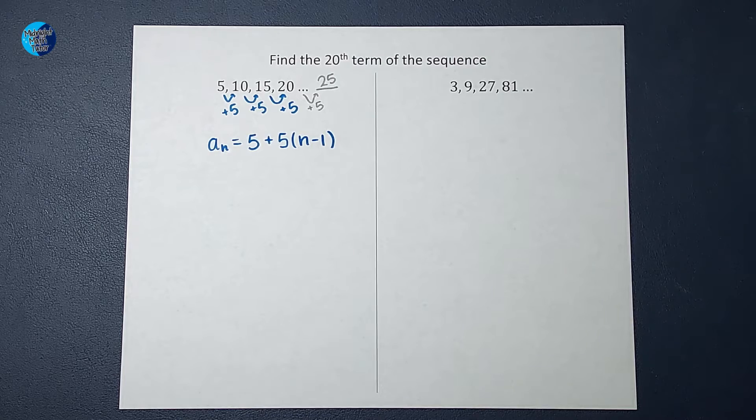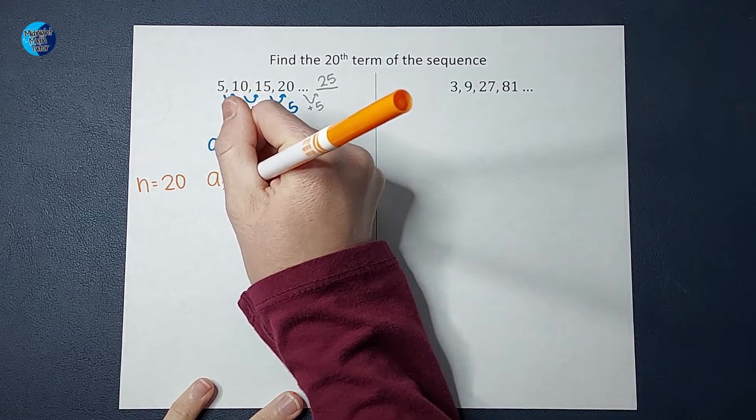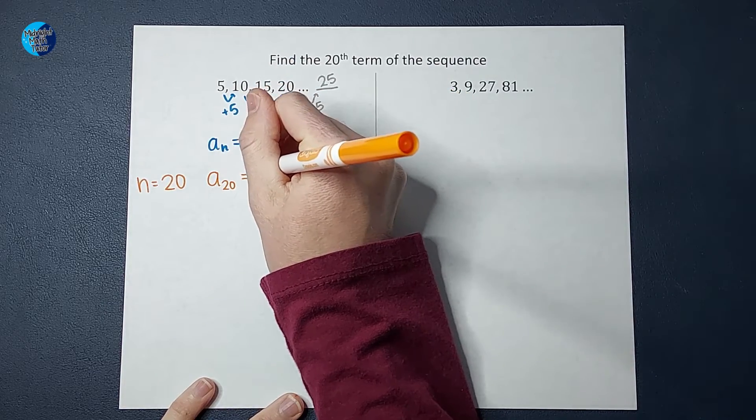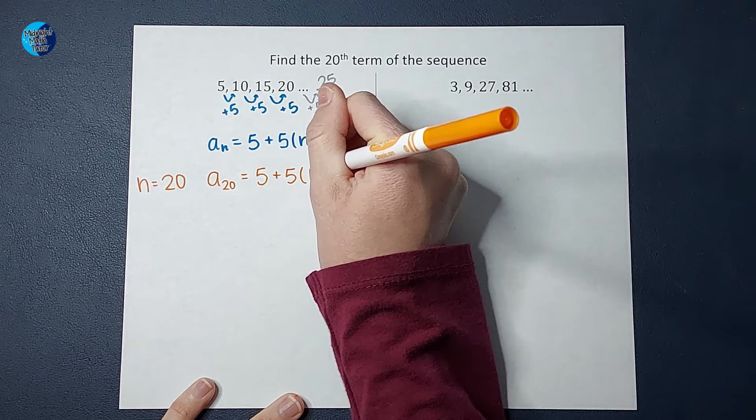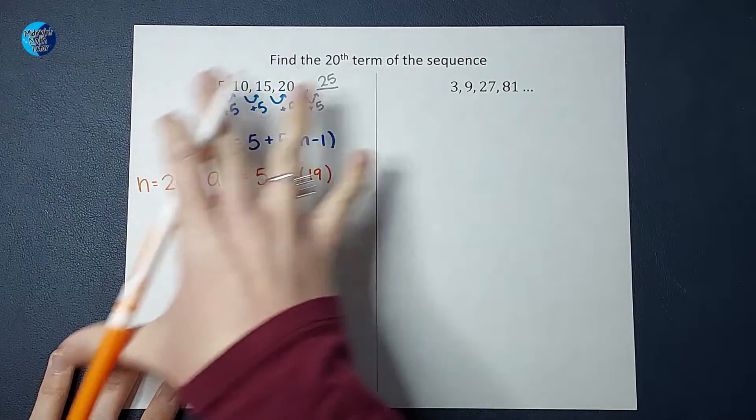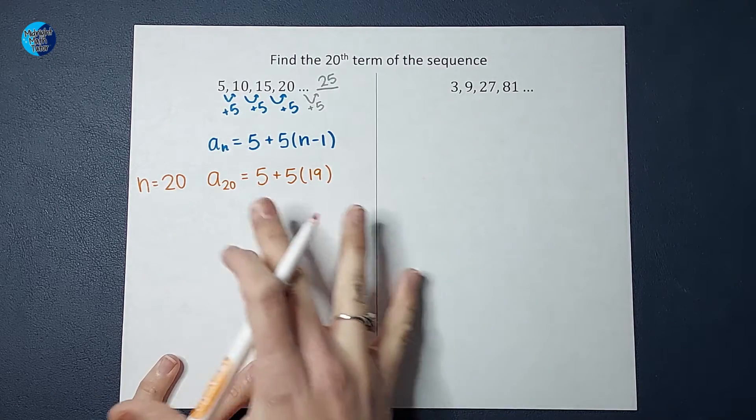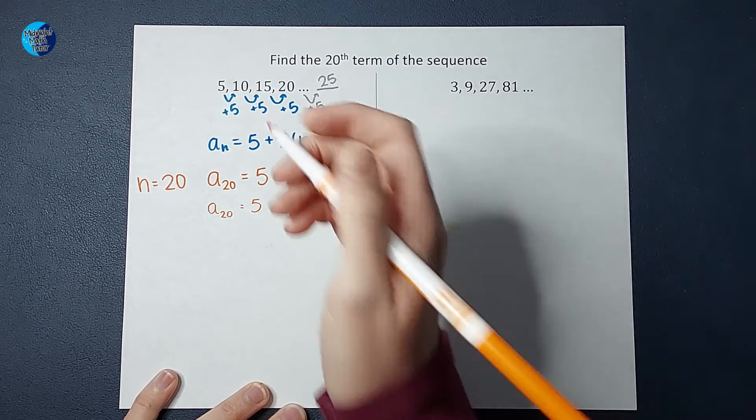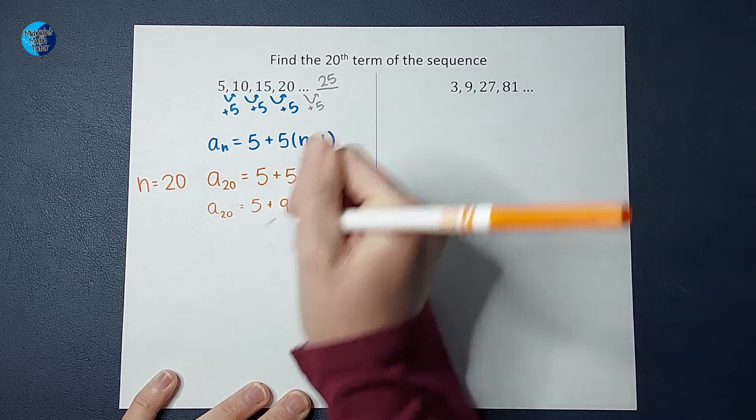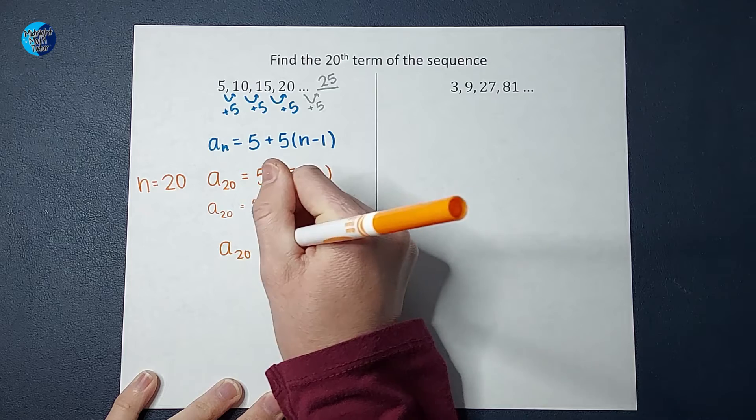But we're not worried about finding the fifth term. We want to find the 20th term. So we are going to plug in 20 for n. So a sub 20, or the 20th number in my sequence, is equal to 5 plus 5 times 20 minus one, which would be 19. Because isn't that true? If I were to do this the long way, get to the 20th term, I would end up adding 5 nineteen times. So let's go ahead and fill this out or continue it down. So a sub 20 is equal to 5 plus 5 times 19, which happens to be 95, and 5 plus 95 is equal to 100. So the 20th term in this sequence, a sub 20, is 100.